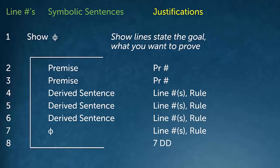The two other components of a derivation are boxes and crossing off. In a derivation, we'll often box off lines when we have succeeded in doing something. The other thing we do in derivations is cross off the show line, and we'll talk about what that means soon.